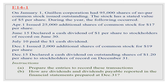Exercise 14-1: On January 1, G Corporation had 95,000 shares of no-par common stock issued and outstanding. The stock has a stated value of $5 per share. During the year, the following occurred: April 1 — issued 25,000 additional shares of common stock for $17 per share. June 15 — declared a cash dividend of $1 per share to stockholders of record on June 30.